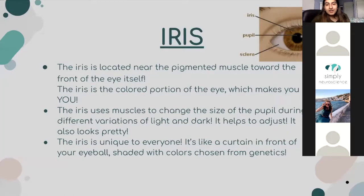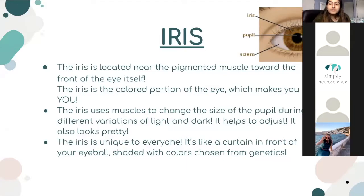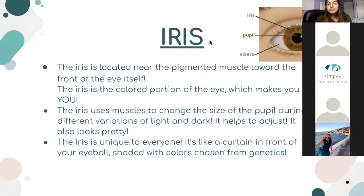The slide I completed was the iris. The iris is located near the pigmented muscle toward the front of the eye. It's the colored portion of the eye, which makes you unique — it's unique to yourself. The iris uses muscles to change the size of the pupil during different variations of light and dark. So your pupil expands or gets really small during a lot of light or when it's completely dark — that's what the iris does. The iris is like a curtain in front of your eyeball, shaded with colors chosen from your genetics, from both your mom and your dad.